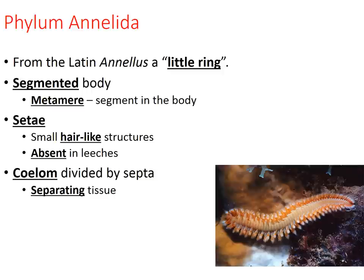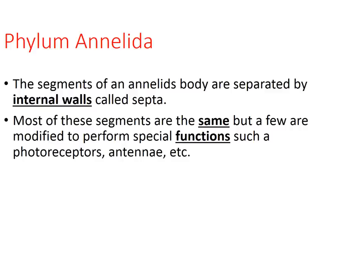These organisms have a true coelom, and their body cavity is divided by septa — the different divisions in their body. The segments of annelids' bodies are separated by internal walls called septa. Most of these segments are the same, though a few of them are modified for specific things. Pretty much from the middle of them all the way back, everything is almost identical within each septum.